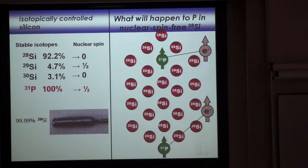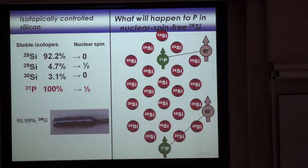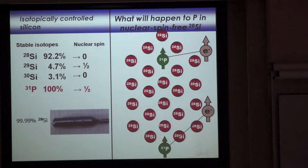Naturally available silicon is always composed of three stable isotopes: 28, 29, and 30, always present in a fixed ratio. Among the three, only 29Si has nuclear spin one-half, while 28Si and 30Si do not have any nuclear spins. Only with silicon, and also with germanium, can we obtain stable isotopes with and without nuclear spins among semiconductors.